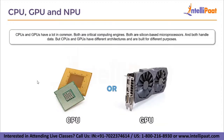CPUs and GPUs have a lot in common. Both are critical computing engines, both are silicon-based microprocessors, and both can handle data. But CPUs and GPUs have different architectures and they are built for very different purposes. The CPU is suited to a wide variety of workloads, especially those for which latency or per-core performance are important. A powerful execution engine, the CPU focuses its smaller number of cores on individual tasks and on getting things done quickly, making it well equipped for jobs ranging from serial computing to running databases.